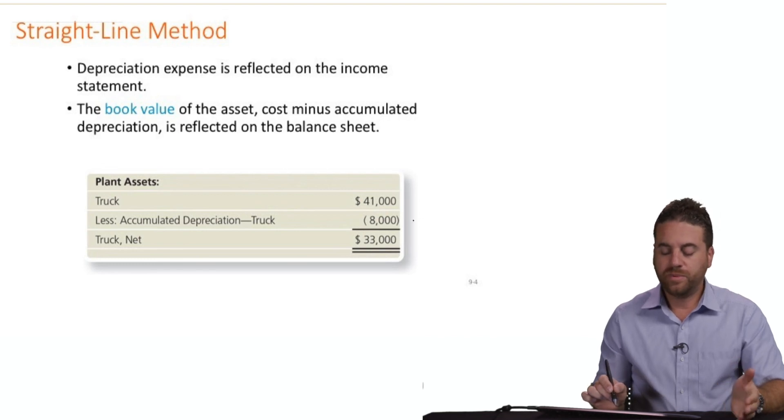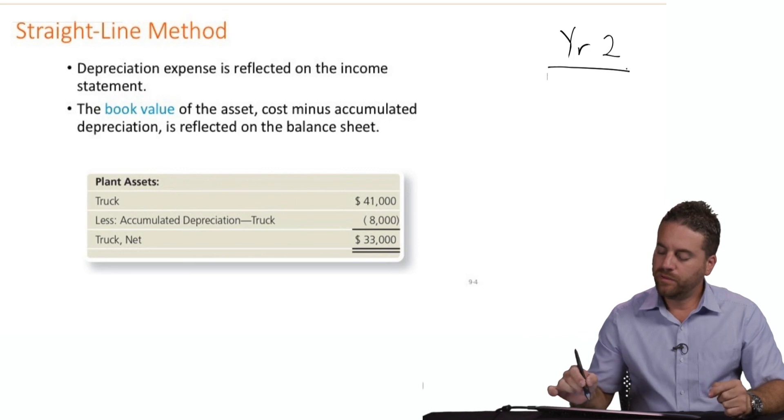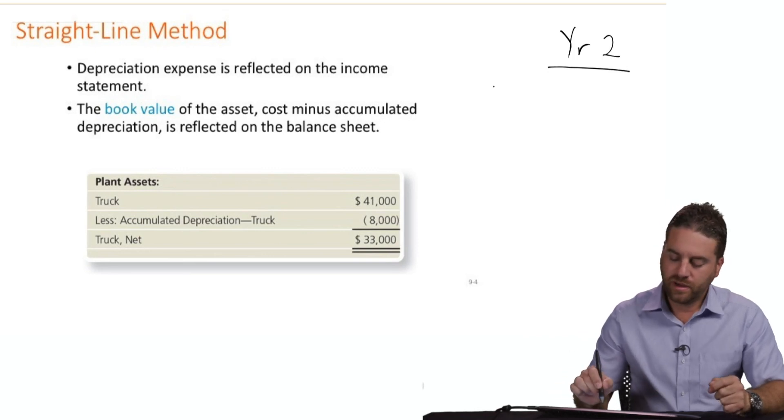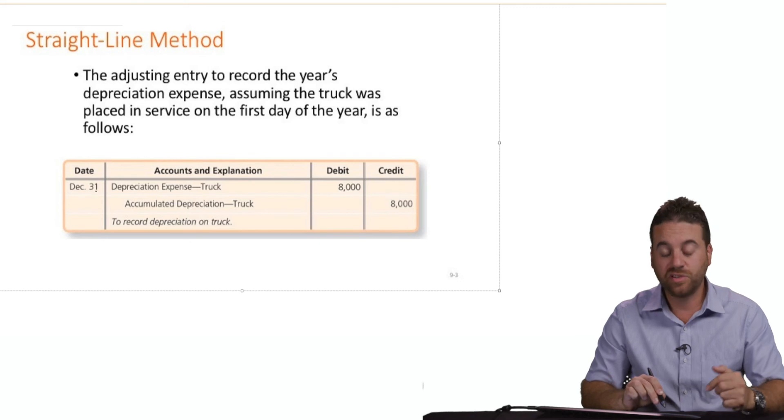At the end of year one, at the end of year two, we will record again the same journal entry. We're going to debit depreciation expense $8,000 and credit accumulated depreciation $8,000, December 31st year two.